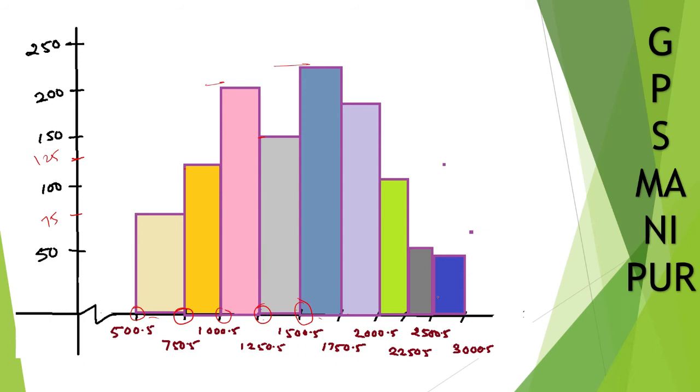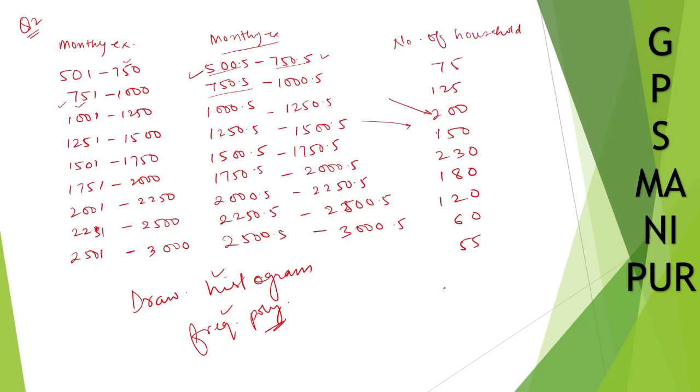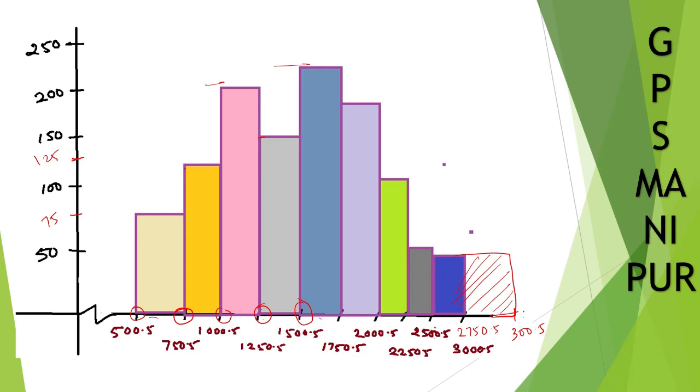Something I did while making this was that 2500. So it will be 2500.5 and this will be 3000.5. So this one, the last rectangle. If you can see carefully, it will be 2500.5 to 3000.5. So 2500.5 to 3000.5. It is a little bit longer.